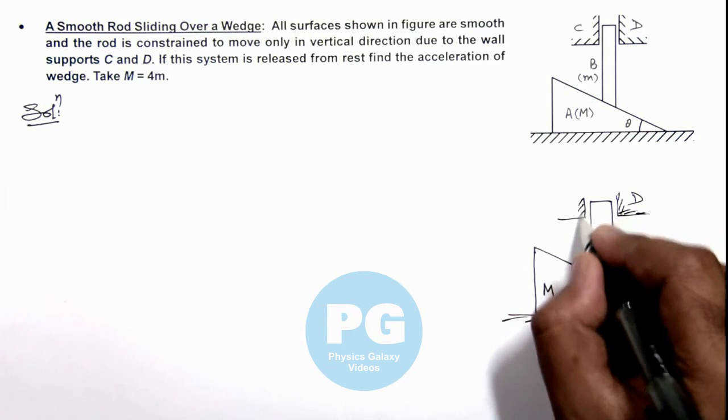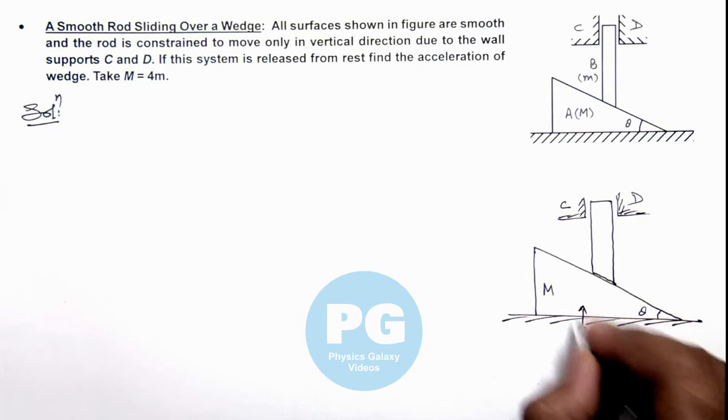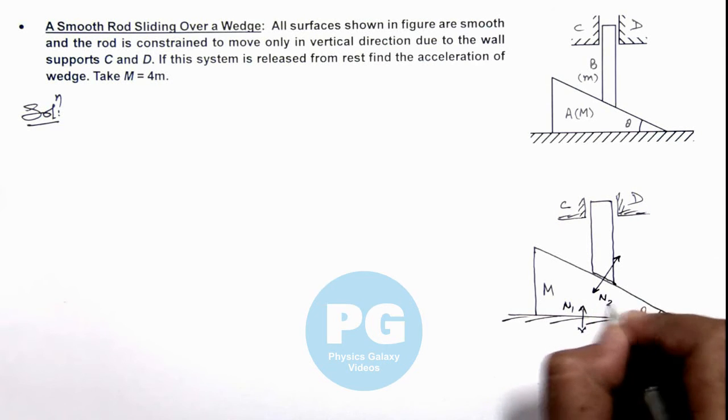Here we can see the normal reaction between ground and the wedge is N1, and a normal reaction acts between the rod and wedge, N2.